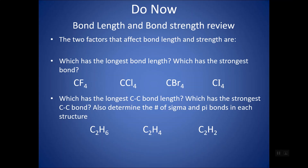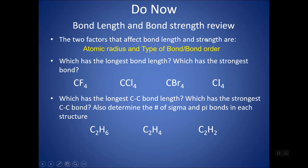In this video we're going to take a look at potential energy diagrams in relation to bonds, but before we do that we just need to review a few things that affect bond length. Remember there are two factors that affect bond length and strength, which you can watch about in my previous video: atomic radius and the type of bond.